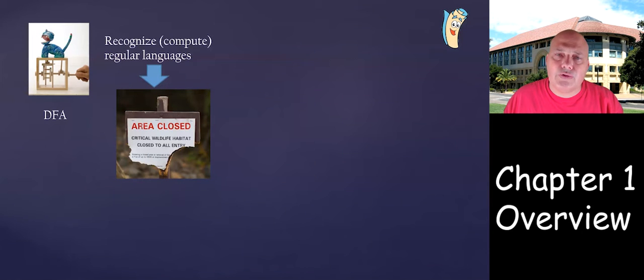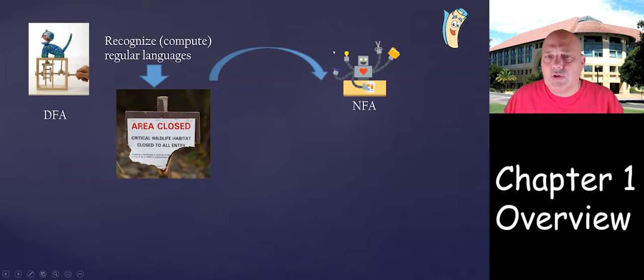In particular, we will focus on very interesting properties called closure properties of languages. Essentially, they are asking: once you have two regular languages and you try to combine them in one way or another, do you get a regular language at the end?